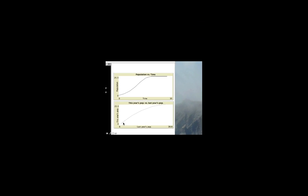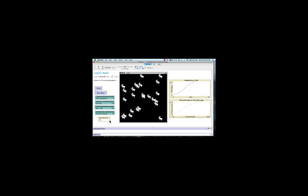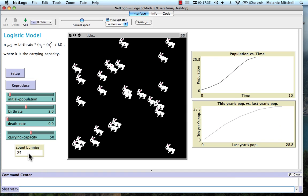Now let's go back to the NetLogo model. An obvious question is, why didn't the number of bunnies go to 50, which is the carrying capacity?